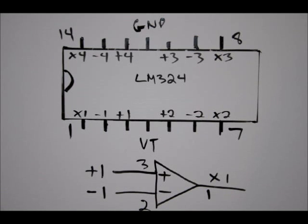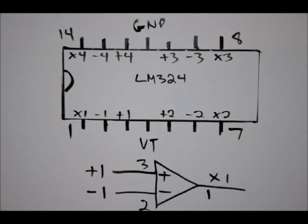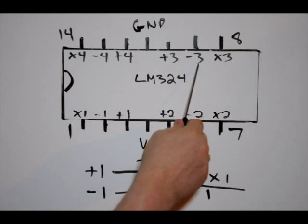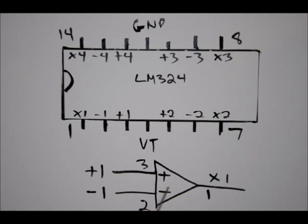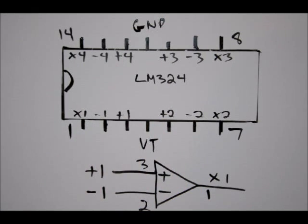So, how I've labeled it is X is output. So, pins 1, 7, 8, and 14 are your outputs. Your minus symbols right here are your negative inputs. And your plus ports are your positive inputs.